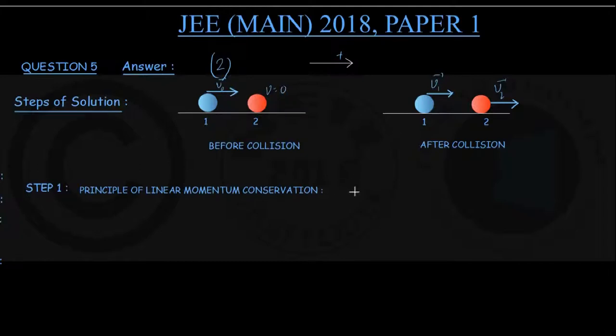Before collision, each particle's mass is m, so for particle one linear momentum was m into v0, and for particle number 2 linear momentum was m into 0.